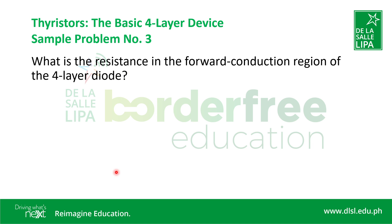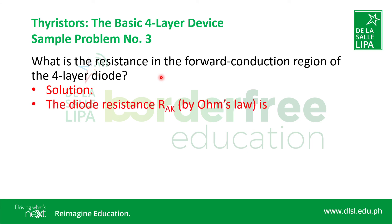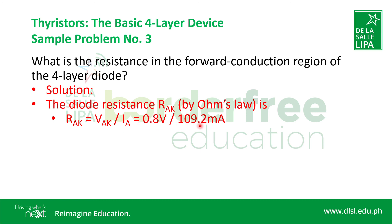The second item in sample problem number three is the resistance in the forward conduction region of the four-layer diode. Using Ohm's law and substituting the already determined values of V_AK and I_A, we arrive at the final answer: R_AK is equal to 7.326 ohms.